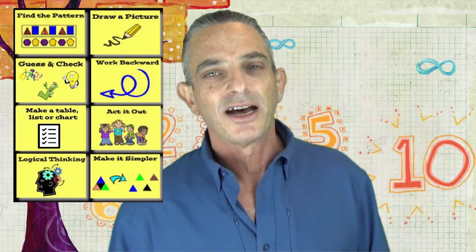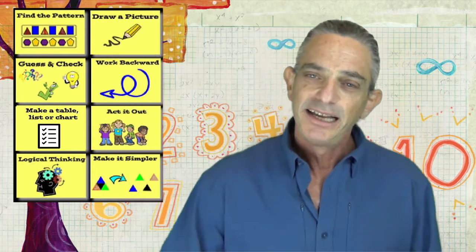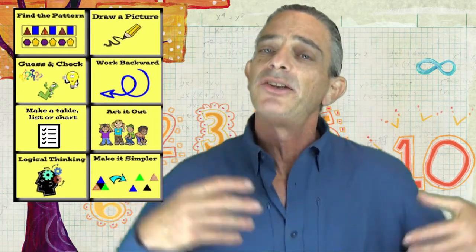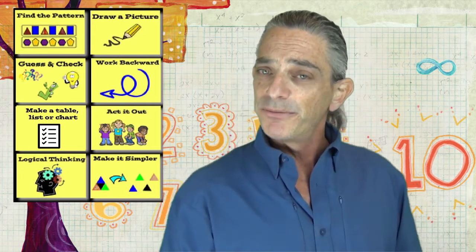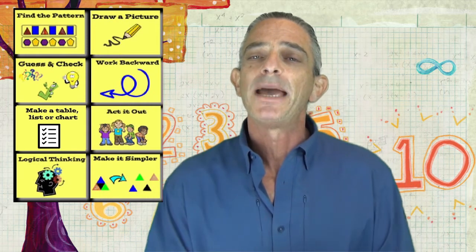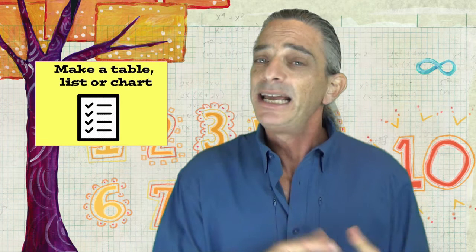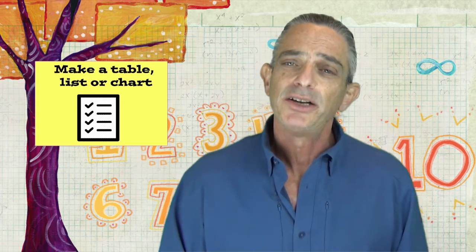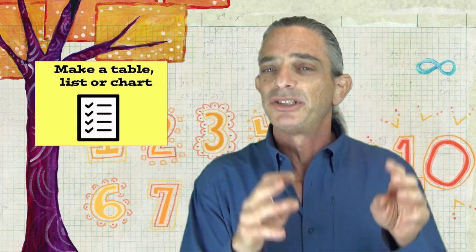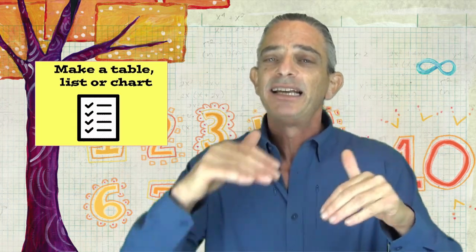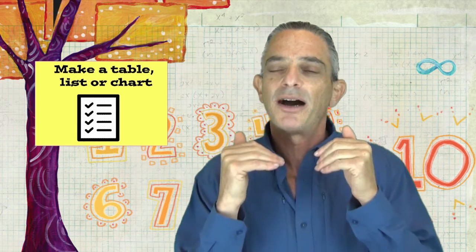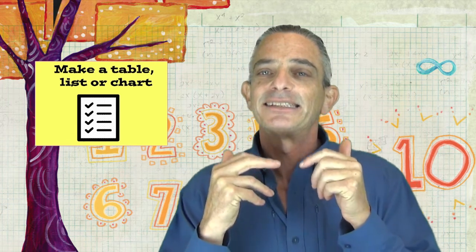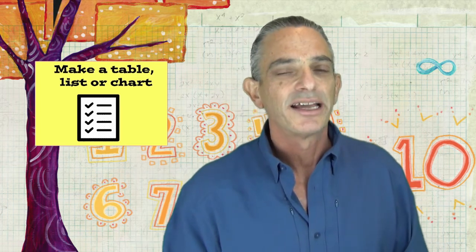Hey, what's up my fellow problem solvers? Thanks for joining me today. In today's video, we're going to explore yet another one of those eight problem solving strategies for the primary mathematician — you. We're going to explore the make a table strategy. To use the make a table strategy, we take the data or the information that the problem gives us and we organize it into a table — rows and columns. Once we organize the information in that table, it'll allow us to more easily see what the problem is asking us for and solve it. Let's take a look at an example.